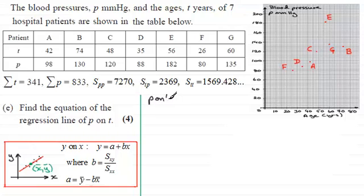the equation will be P equals a constant A plus another constant B times T in place of Y equals A plus BX.